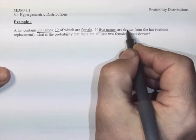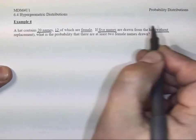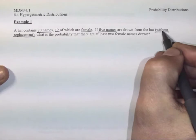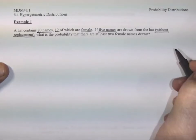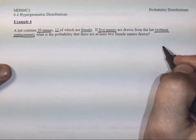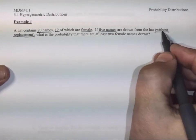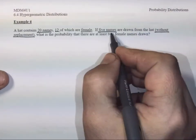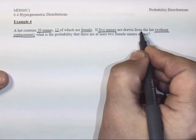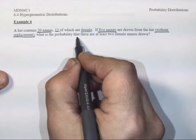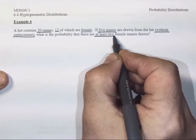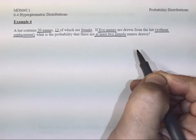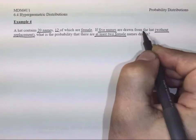If five names are drawn from the hat without replacement, as soon as I read without replacement, automatically this has to be a hypergeometric distribution because if I'm not replacing them, then that is a dependent situation. So if five names are drawn from the hat, what is the probability that there are at least two female names drawn?